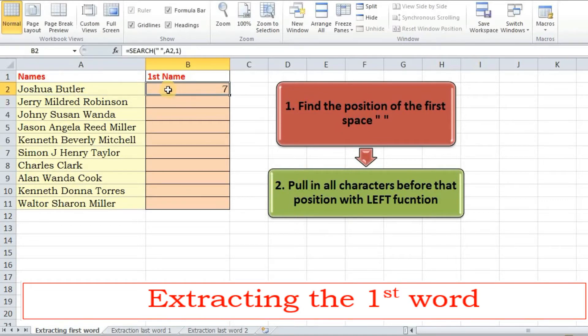So we succeeded in finding the first space. Now we have to pull in all the characters just before this position, up to sixth position, with the help of left function.